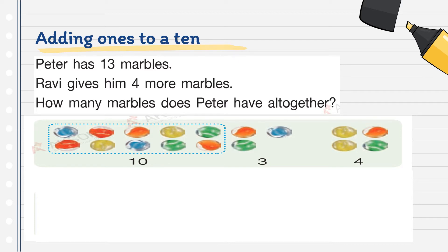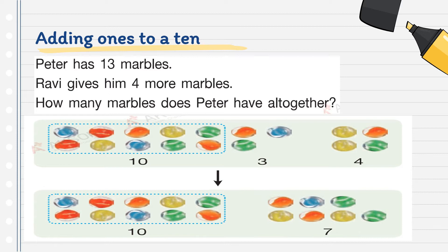Let's look at the illustration. We have 10 and 3, plus the 4 marbles that Ravi gives. Do you remember our past lesson on adding by making 10? We separate 10 and 3, and then we add 3 plus 4. So 3 plus 4 is equal to 7.